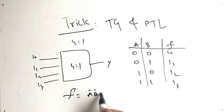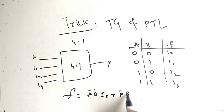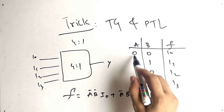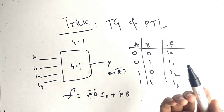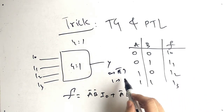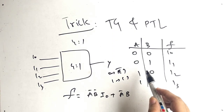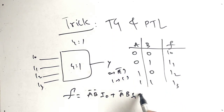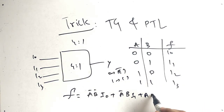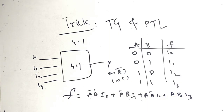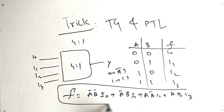So our Boolean equation F is: A̅B̅·I0 + A̅B·I1 + AB̅·I2 + AB·I3. The rule is: if the select line value is 0, write the complemented (bar) form; if it is 1, write the letter as it is. This gives us our complete equation.